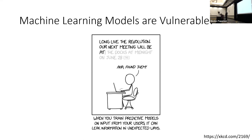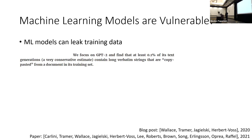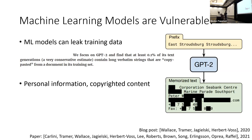The joke is that the model suggested someone else's secret as the completion to their email. That's just a comic, but reality resembles comedy sometimes. There's a nice work by Carlini et al. which demonstrates that machine learning models can leak information about their training data. From their blog post, they find that GPT-2 essentially copy-pastes a large fraction — 0.1 — of its text generations from the training data, including personal information and copyrighted content.